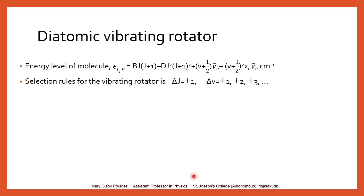For rotational energy, the selection rule is ΔJ = ±1. Whereas for vibrational energy level transitions, the selection rule is that of an anharmonic oscillator: Δv = ±1, ±2, ±3, etc.